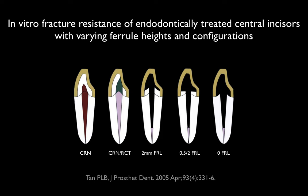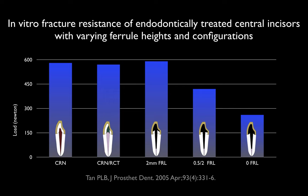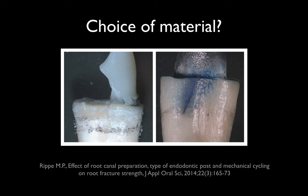The third group was an endodontically treated tooth with a cast post and core with a two-millimeter uniform ferrule around the tooth. The fourth group was a cast post and core with a two-millimeter ferrule on the buccal and lingual, but a half-millimeter ferrule on the mesial and distal. The final group was a cast post and core with no ferrule. The results are not surprising: the no-ferrule group failed first, followed by the uneven ferrule. The two-millimeter uniform ferrule performed equally as well as the crown with no endo and the crown with endo — it is the gold standard.